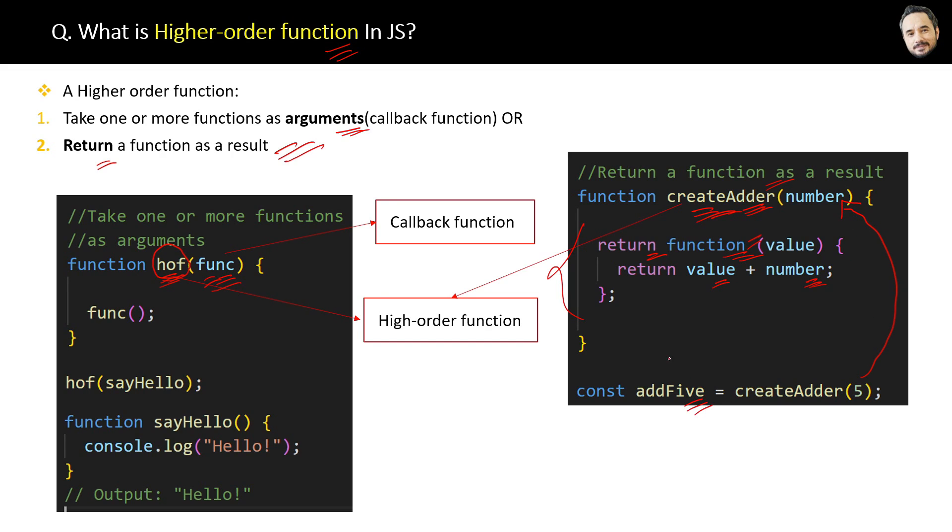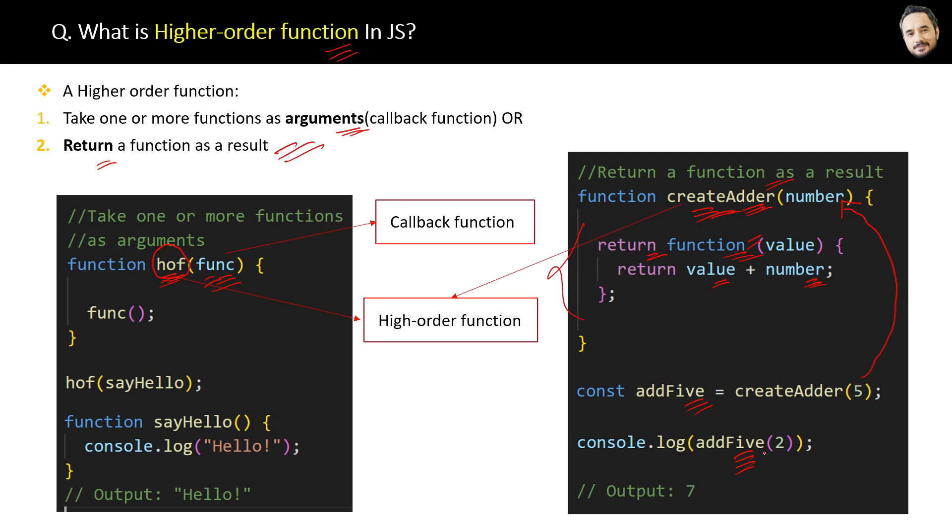The first step is to pass the parameter 5 in the createAdder method and get the result function in the addFive variable. Then use this addFive variable as a function and pass 2 as the parameter.